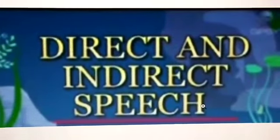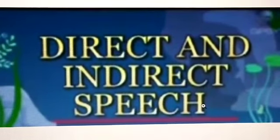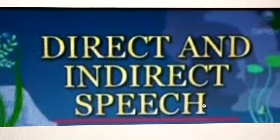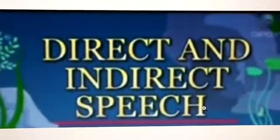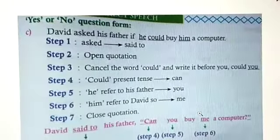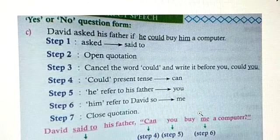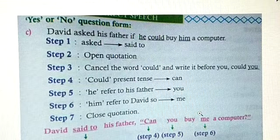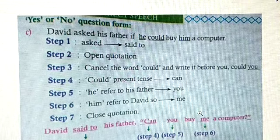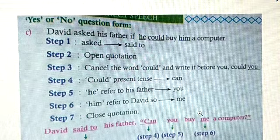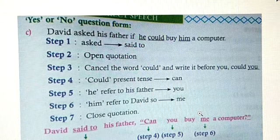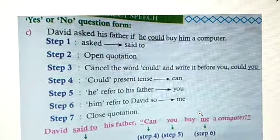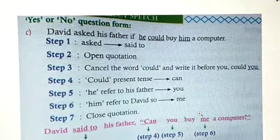Happy day, students! Today I am going to deal with English grammar: direct and indirect speech, Part 4. Already we have seen the change from indirect to direct speech, focused on assertive sentences, then interrogative sentences. We have finished up to WH question form. Now we shall move on to the yes or no question form.